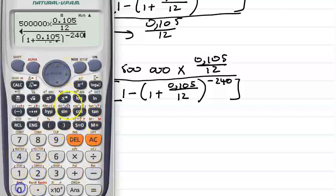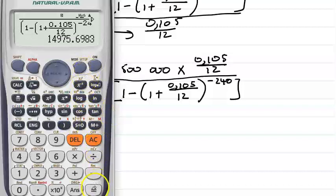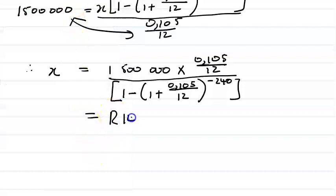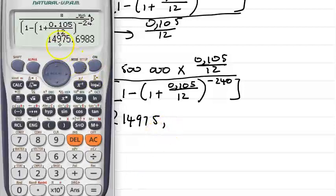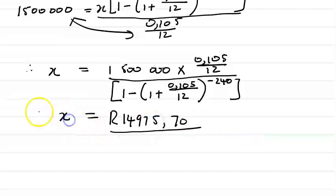Completing the bracket — that's to the minus 240 — and the amount that I now have from the calculator is R14,975 and 70 cents. We round off to two decimal places, so the monthly installment x is equal to R14,975.70.